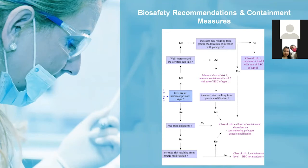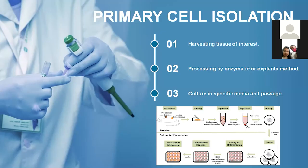Certain regulatory authorities have proposed that animal cell culture should never be manipulated in a biosafety cabinet with horizontal laminar airflow. Previously, horizontal laminar flow was used mostly for culture work like media preparation or media changes. However, we are not supposed to do any primary cell work in a horizontal biosafety cabinet because it does not protect you from the risk associated with primary cell culture.